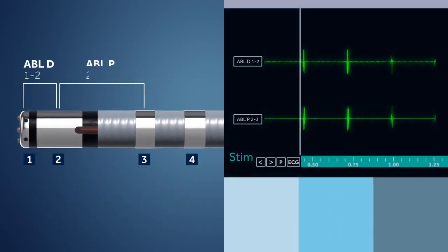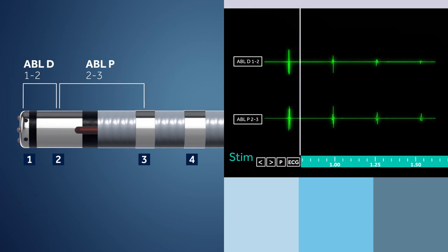The EP recording system can be configured to display electrograms from the distal and proximal electrodes, allowing for precise ablation guidance.